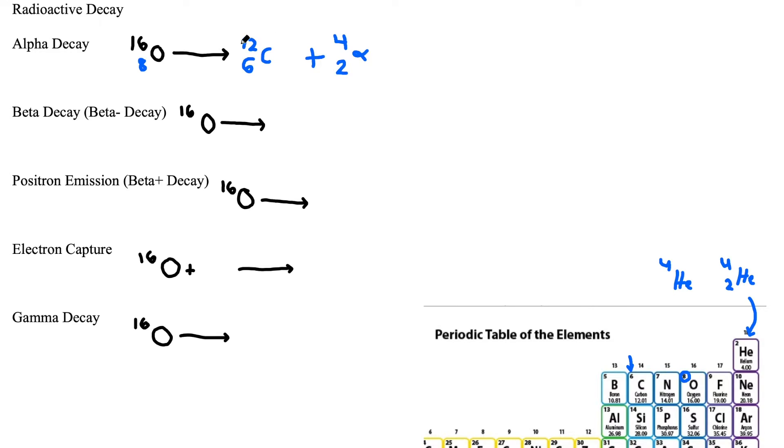So now we have this balanced quote-unquote chemical equation. Even though it's not really a chemical equation in the classic sense, we can treat it as such. Because our protons and neutrons aren't just going to disappear, the law of conservation of mass still applies to them.